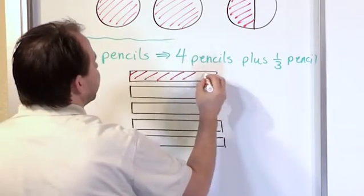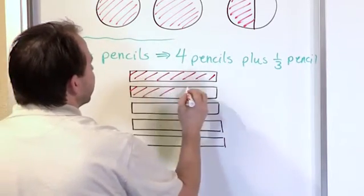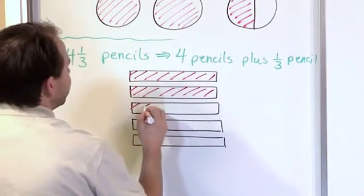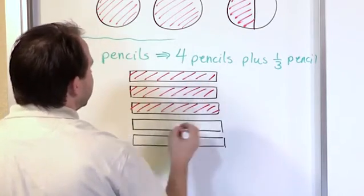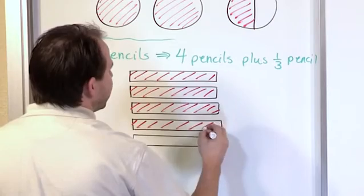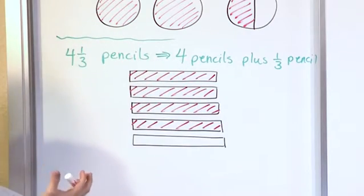So here is pencil number one, so I take that one away. Here's pencil number two, I take that one away. Here's pencil number three, take that one away. Here's pencil number four, I take that one away. So this comes from the fact that there's four pencils in front.